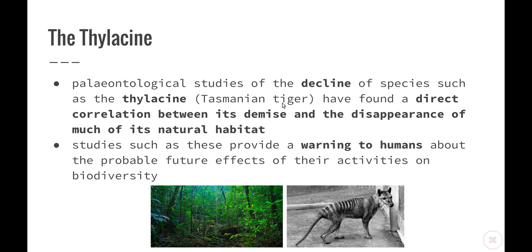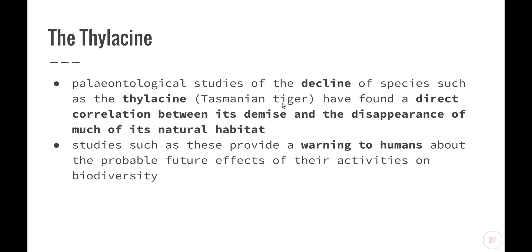A particular case study for this is the thylacine. Paleontological studies tracing the decline of species such as the thylacine — more commonly referred to as the Tasmanian tiger — have found a direct correlation between the demise of the thylacine and the disappearance of much of its natural habitat. These organisms used to live in the rainforest areas of Tasmania, and as those rainforests declined, unfortunately so has the thylacine. Studies such as these are able to provide a warning to humans about the probable future effects of our activities on biodiversity. By looking backwards, we're able to give ourselves an idea of what's going to happen in the future if we keep following the same patterns.